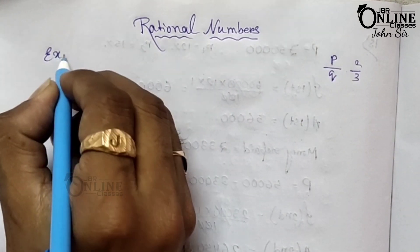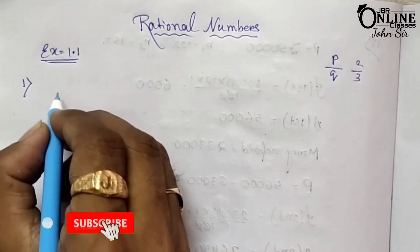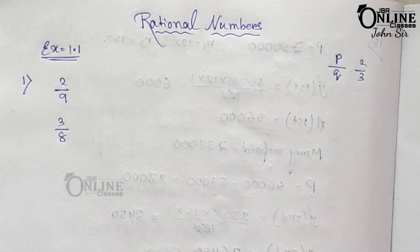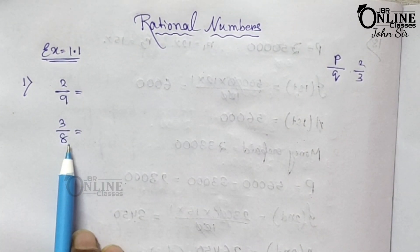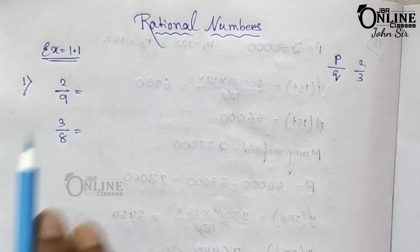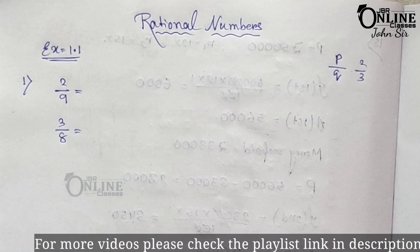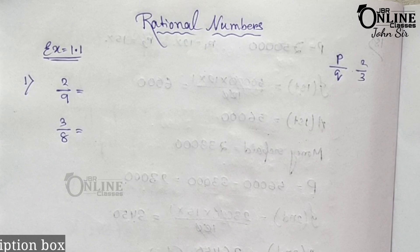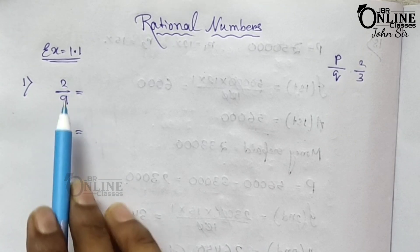So here the first problem from exercise 1.1: insert a rational number between 2 by 9 and 3 by 8, and arrange in descending order. First, to arrange in descending order, you have to know which one is greater and which one is smaller. As the denominator here is 9 and here is 8, you cannot easily tell which one is greater or smaller.